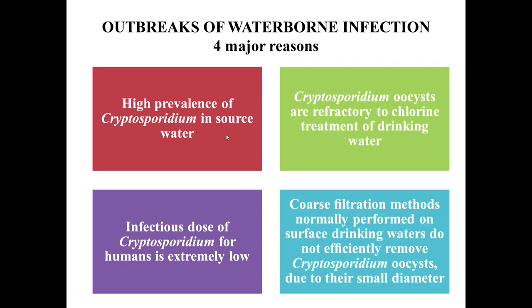There is no vector for cryptosporidiosis, and we see many outbreaks of waterborne infection. There are 4 major reasons: first, there is high prevalence of Cryptosporidium in water sources; second, most oocysts are refractory to chlorine treatment of drinking water; third, most filtration methods are not efficient to remove oocysts due to their small diameter; and fourth, the infectious dose for humans is extremely low, making it very difficult to avoid infection.